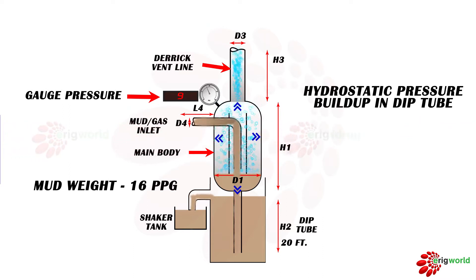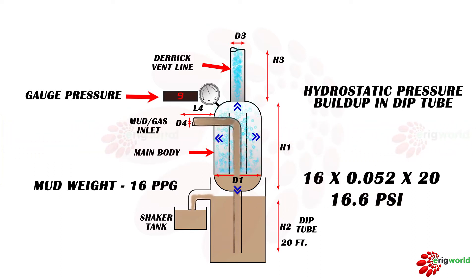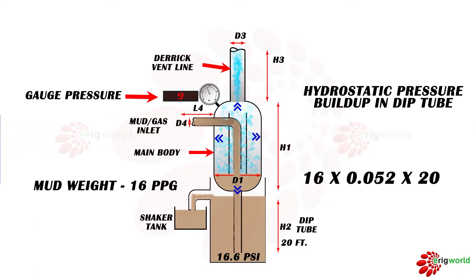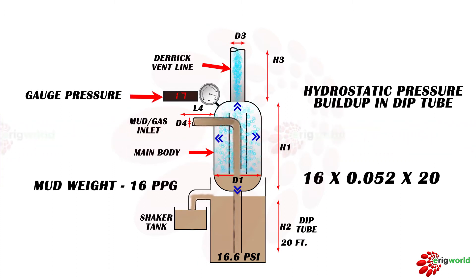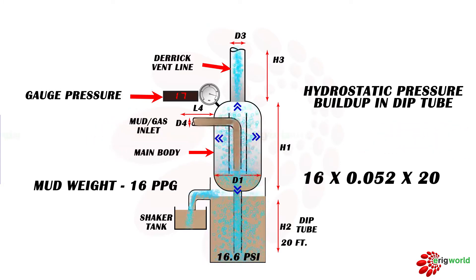We have a calculation for hydrostatic pressure: mud weight × constant × deep tube height, which gives 16.6 psi. So the hydrostatic pressure build-up in the deep tube due to mud is 16.6 psi. If the system pressure is 9 psi, it fails to penetrate the deep tube and the system works correctly — gas passes through the vent line. However, if the pressure in the vessel becomes 17 psi, gas needs only 16.6 psi to pass through the deep tube, so gas will start penetrating downward, breach the deep tube, and eventually reach the shaker area.